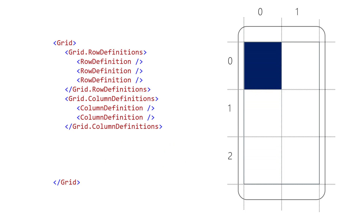The row and column attached properties both default to zero. If you forget to apply those properties, the child will simply end up in the upper left corner. Additionally, row span and column span both default to one, meaning a child will occupy a single cell by default.